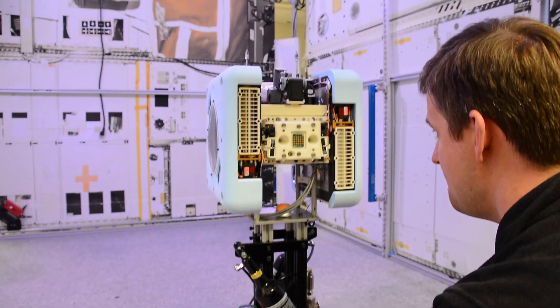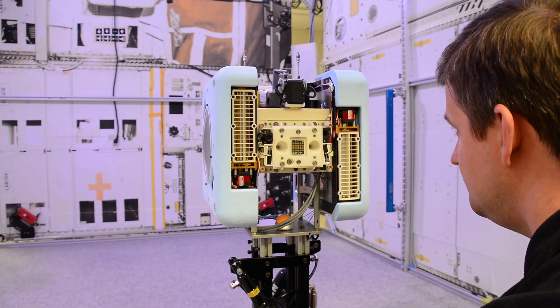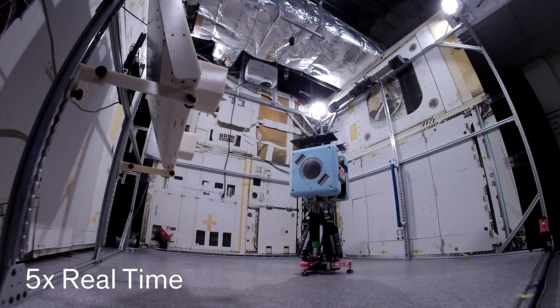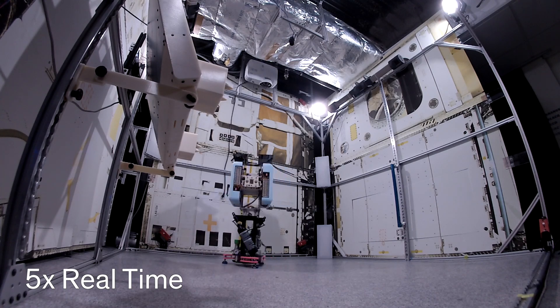This is prototype four of the Astrobee. In many ways, it's not exactly flight-like, but it's pretty close in terms of things like size and the layout of the different components of the robot.